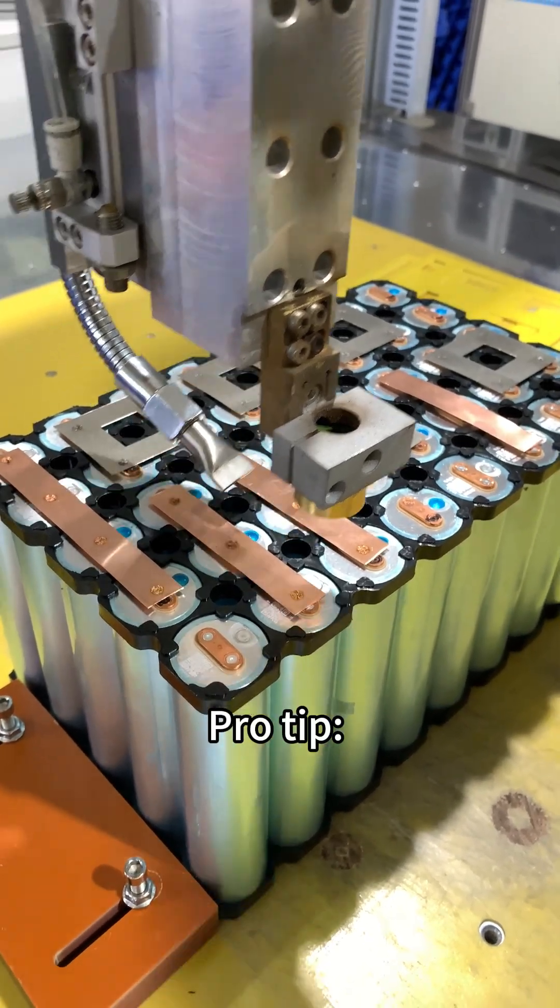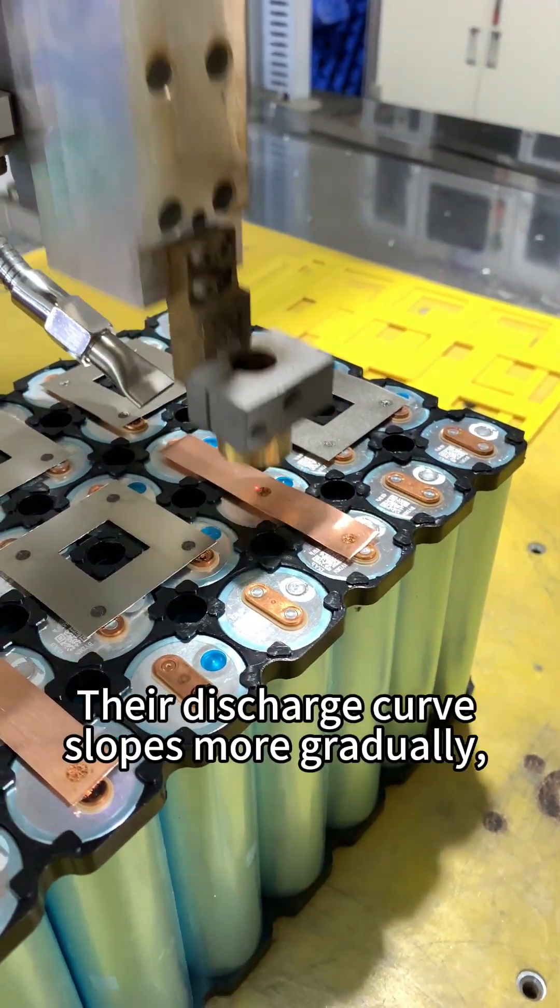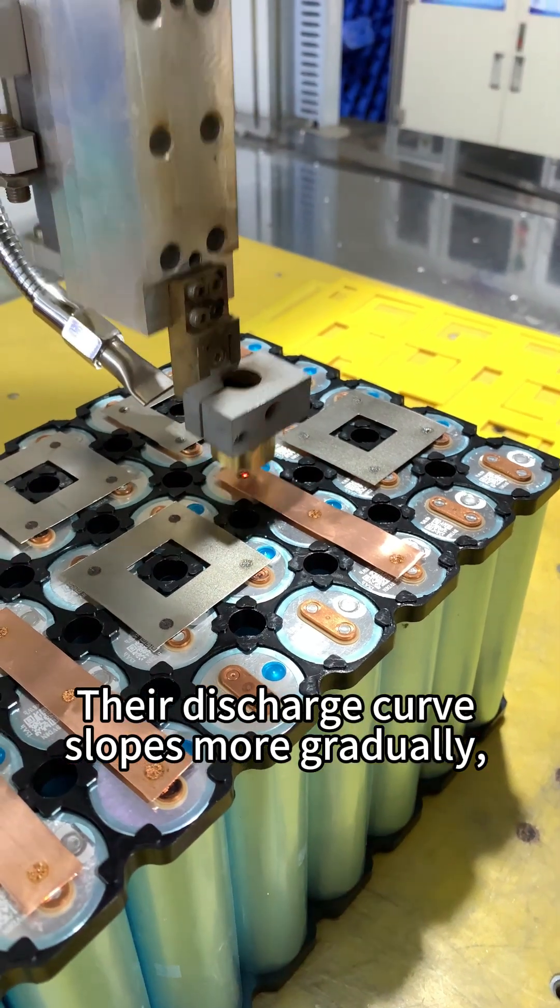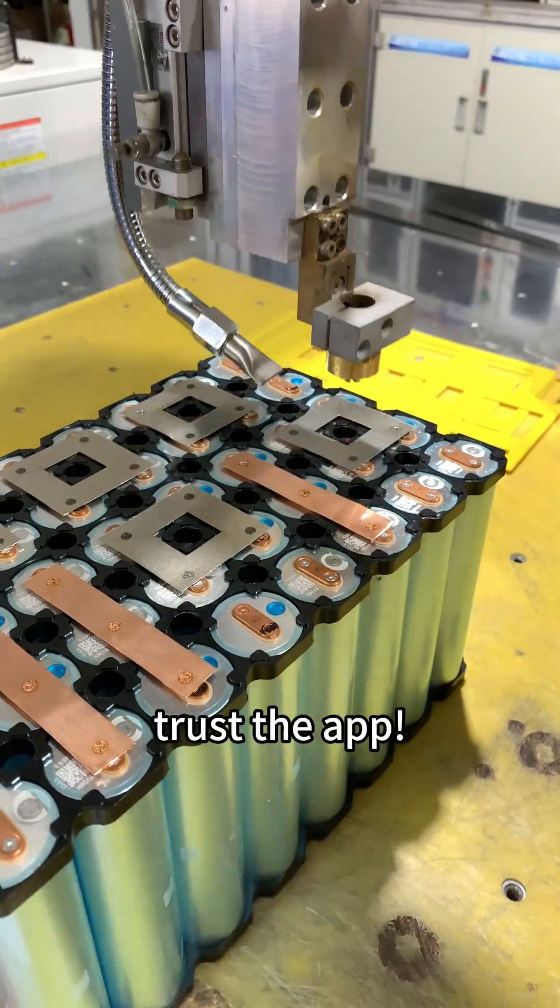Pro tip: for better voltage tracking, consider NMC lithium batteries. Their discharge curve slopes more gradually, giving slightly better meter readings. But when in doubt, trust the app.